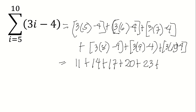Plus 3 times 10 is 30, minus 4, that is 26. And then we add all the terms: 11 plus 14 plus 17 plus 20 plus 23 plus 26, the answer is 111.